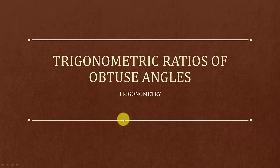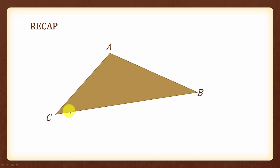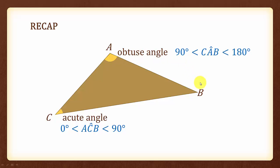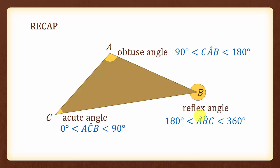In this chapter, we shall learn about the trigonometric ratios of obtuse angles. Let us start off with a quick recap. What do you call the angle that is between 0 degree and 90 degree? Yes, we call it the acute angle. What about the angle that is between 90 and 180 degree? Yes, we call it the obtuse angle. Finally, the angle that is more than 180 degree and less than 360 degree will be called the reflex angle. And in this topic, we shall learn how to find the trigonometric ratios of obtuse angles.